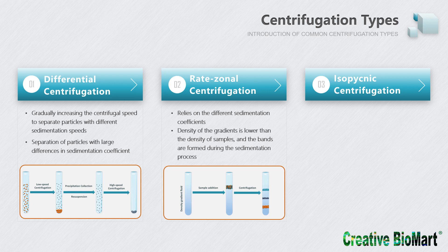The gradient solution used in rate-zonal centrifugation needs characteristics such as good chemical stability, low permeability, high viscosity, easy separation, and low cost — for example, sucrose and glycerol. Rate-zonal centrifugation is generally used to separate particles of similar density but different molecular weight, such as proteins.